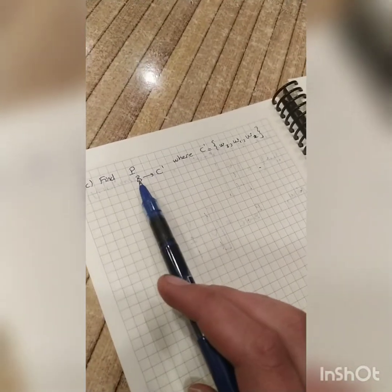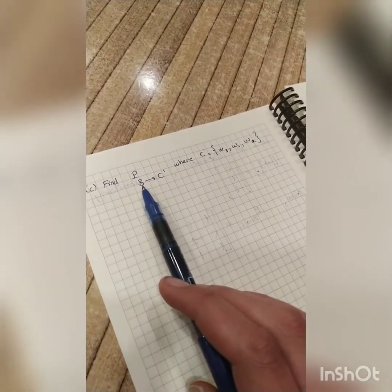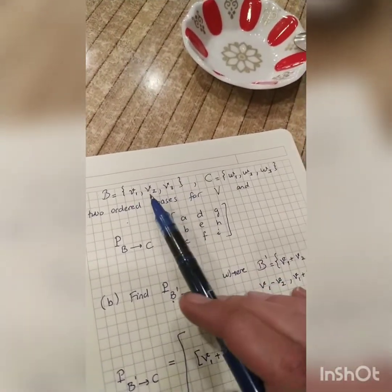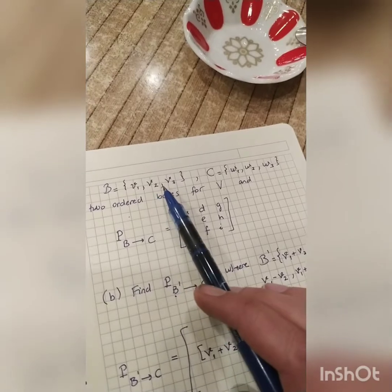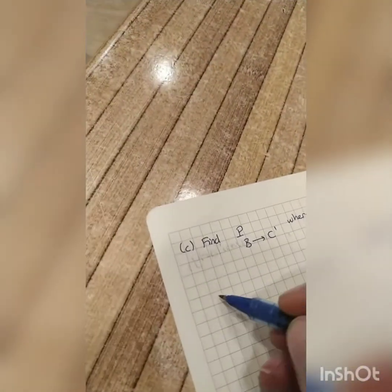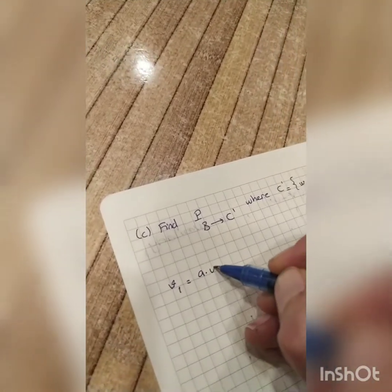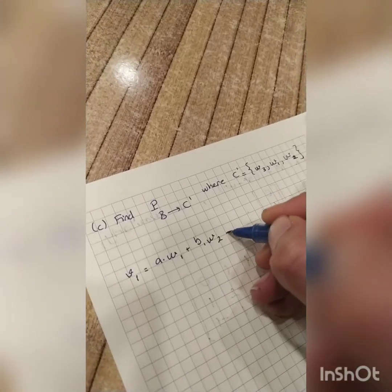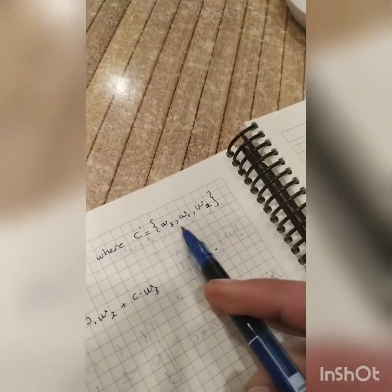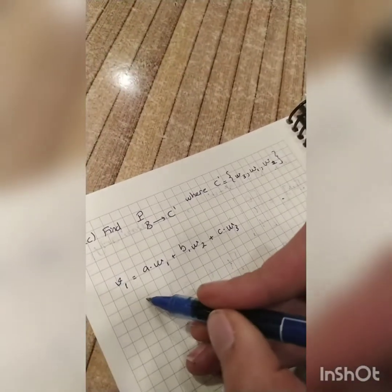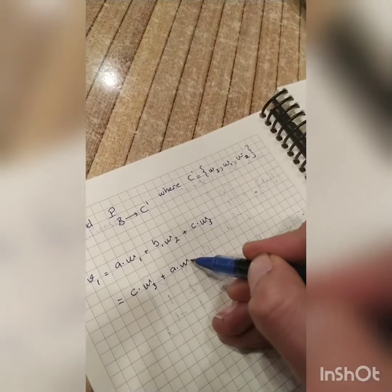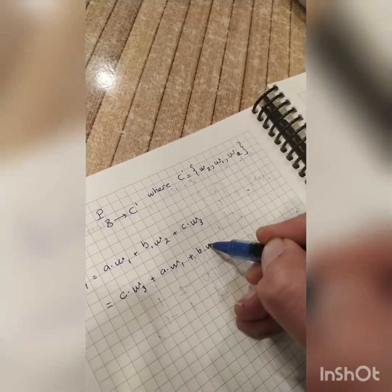So what am I going to do? I am going to find, here I have B, so I'm going for the basis vectors of B. I'm going for the coordinates of these vectors in this basis. Which means, from the matrix, we know that V1 is actually A times W1, B times W2, plus C times W3. When I put them in this order, what happens is this. I see C times W3 plus A times W1 plus B times W2.